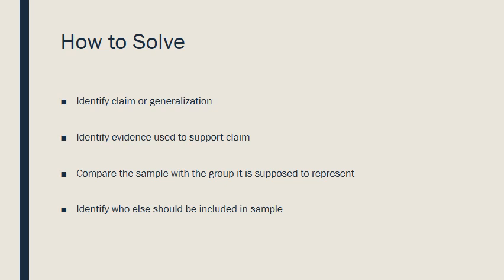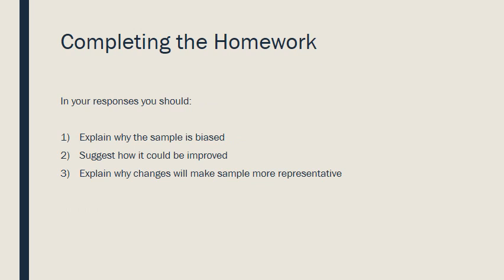To improve the sample and figure out how to make it less biased and more representative, identify who else should be included, or who instead should be included. How could you make the sampling more representative by looking for a broader cross section? Who's left out? In your responses: one, explain why the sample is biased; two, suggest how it could be improved and what changes you'd make; three, explain why those changes will make the sample more representative.